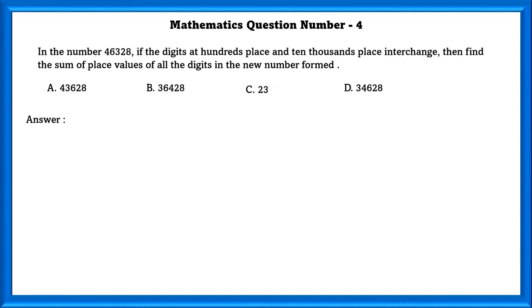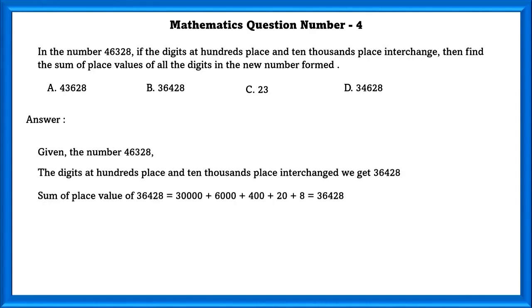Mathematics question number 4. In the number 46,328, if the digit at 100th place and 10,000th place is interchanged, then find the sum of place values of all the digits in the new number form. If we interchange the 10,000th and 1000th place, we will get 36,428. And the sum of place values in this number is equal to 36,428. So the answer is B.